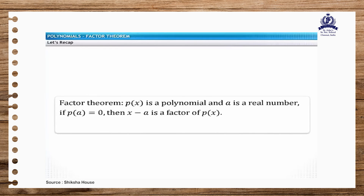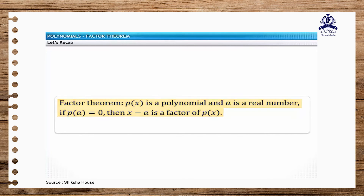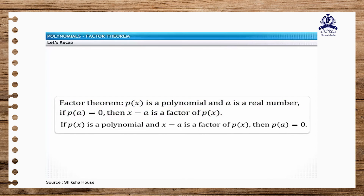Let's recap. The factor theorem states that p of x is a polynomial and a is a real number. If p of a equals 0, then x minus a is a factor of p of x. The converse is also true.